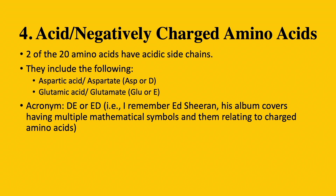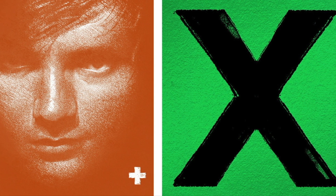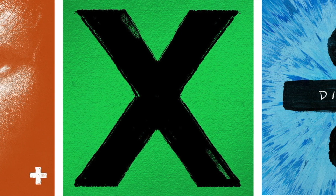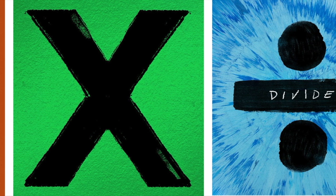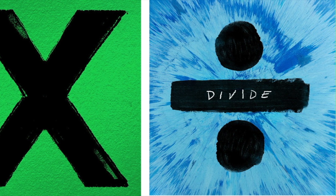This is what gives each of these amino acids a net negative charge, making them negatively charged. The acronym I use to remember these two amino acids is D as in DE, or ED — to be honest I prefer ED, because it reminds me of Ed Sheeran and how his album covers tend to have math symbols on them, relating to the negatively charged amino acids. You can use whatever acronym you prefer.